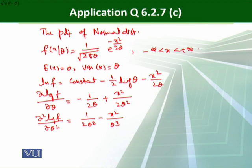Now, very simple, you can easily find the Fisher information, that is I of theta, and that is equal to minus expected value of curly 2 log f over curly theta square. And that is basically the constant, that is minus 1 over 2 theta square,